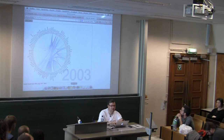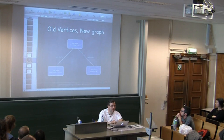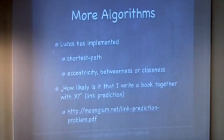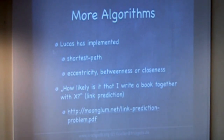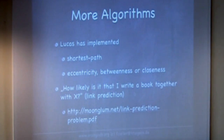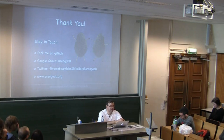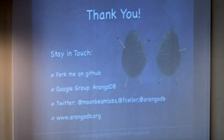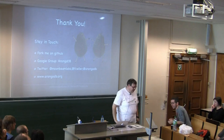Lucas has implemented quite a lot of other algorithms like shortest paths or various measurements for the vertices. These are still single-threaded implementations, so I'm very keen to look into the Pregel idea from this morning, which allows you to do that in parallel. You can find the link prediction there as well. If you are interested, just send us a Twitter message. If you have the perfect idea how to display large graphs, send us a sketch and we will try to get that running in D3. Thank you very much.